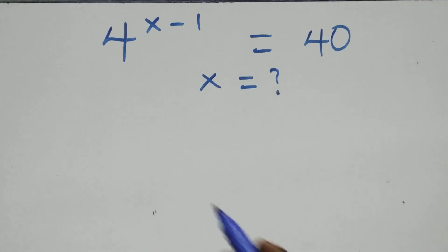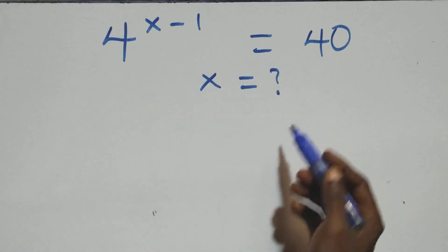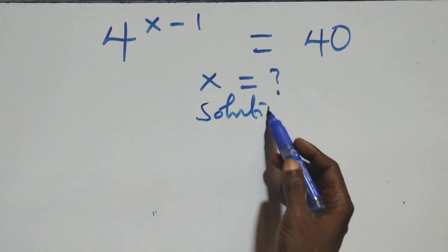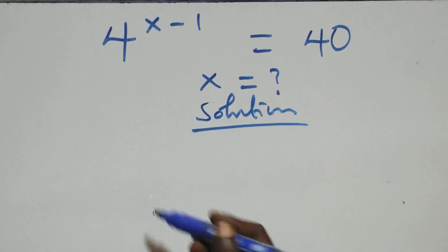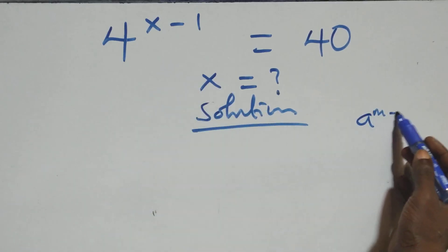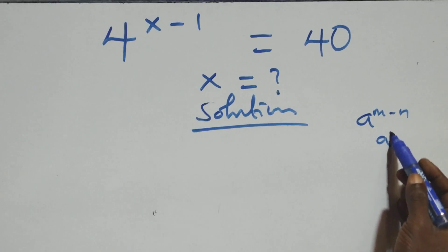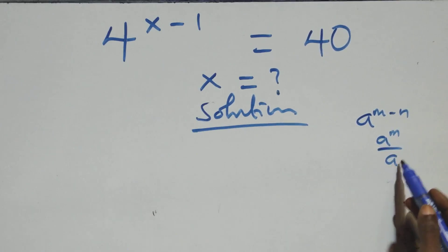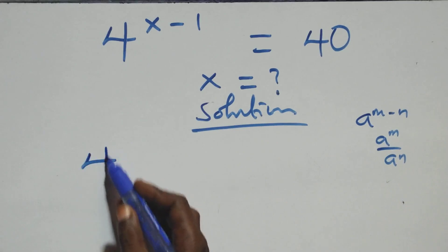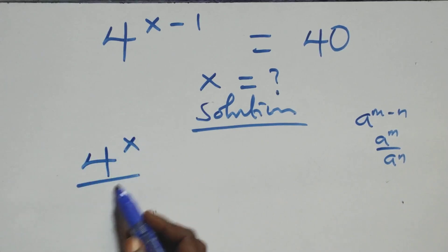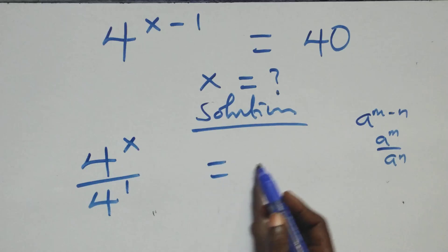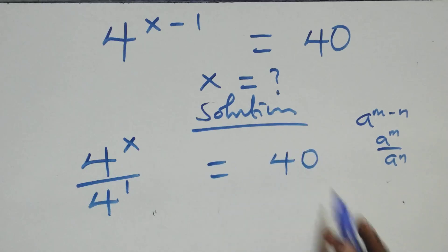Hello, you are welcome. How to solve this nice exponential equation. What we have here: a raised to power n minus n is the same thing as a raised to power n over a raised to power n. We write this as 4 raised to power x over 4 raised to power 1 equals 40.